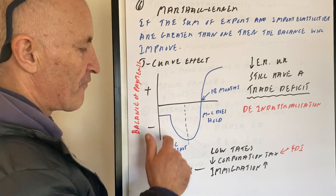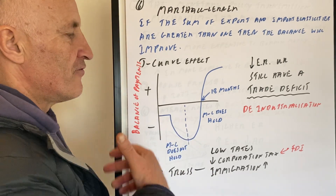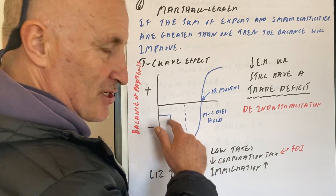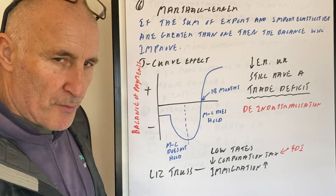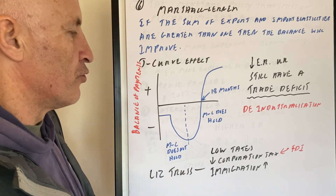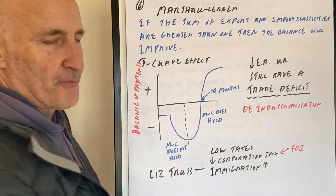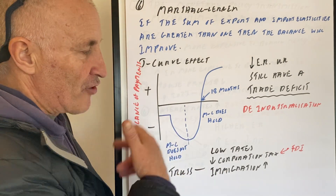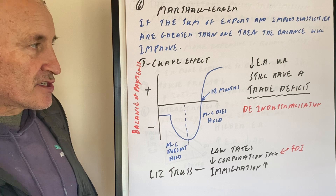According to the J-curve effect, the Marshall-Lerner condition does not hold initially. When the exchange rate decreases, the balance of payments will initially get worse. If the price of oil imports goes up, for example, we still want to buy those imports, so we spend more money on them. Eventually, though, the Marshall-Lerner condition will hold — probably after about 18 months. After that point, the balance of payments will hit zero and eventually reach a positive position.